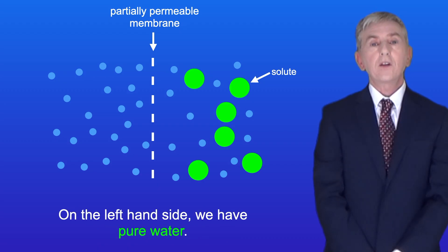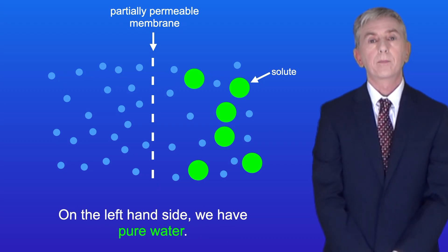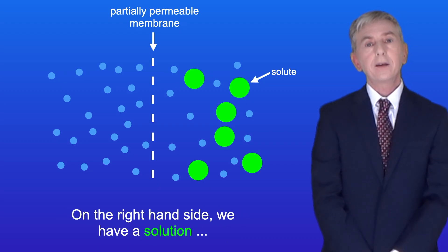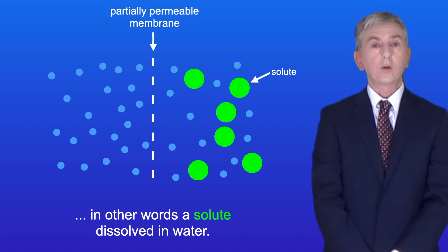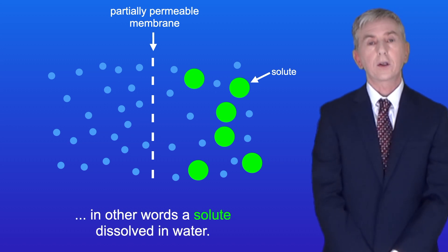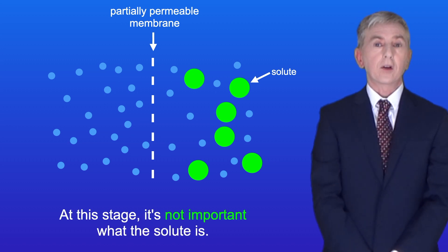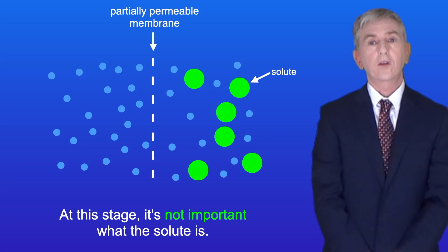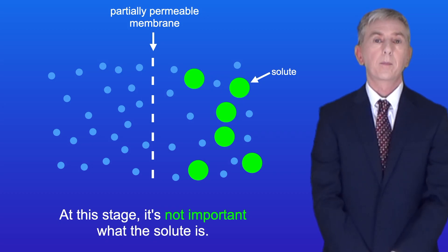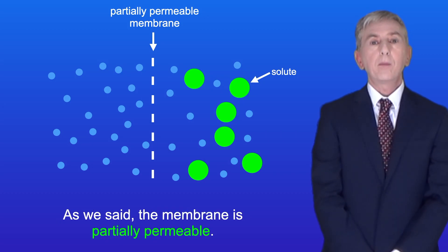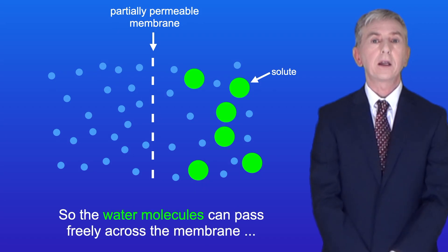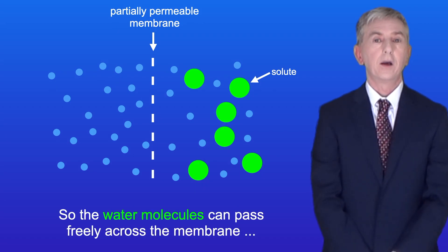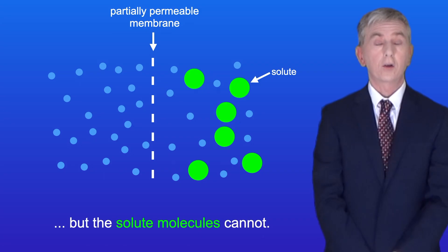On the left hand side we've got pure water, and on the right hand side we've got a solution, in other words a solute dissolved in water. And at this stage it's not important what the solute is. Now as we said the membrane is partially permeable, so the water molecules can pass freely across the membrane, but the solute molecules cannot.